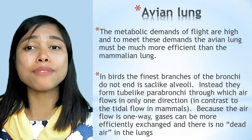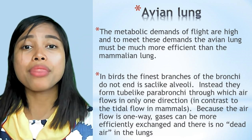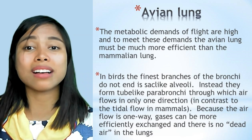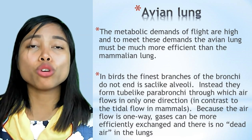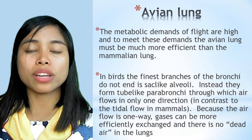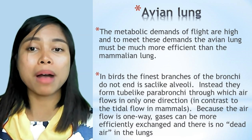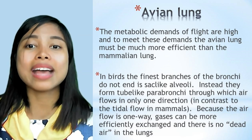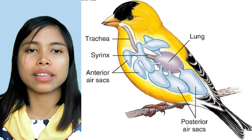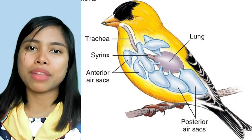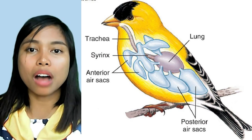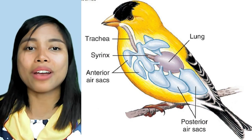The avian lung is highly efficient because the metabolic demands of flight are high. In birds, the finest branches of the bronchi do not end in sacs like alveoli — instead they form tube-like parabronchi through which air flows in only one direction. Because airflow is one way, gases can be more efficiently exchanged and there is no dead air in the lungs. The bird's anatomy includes the trachea, syrinx, anterior air sacs, lungs, and posterior air sacs.